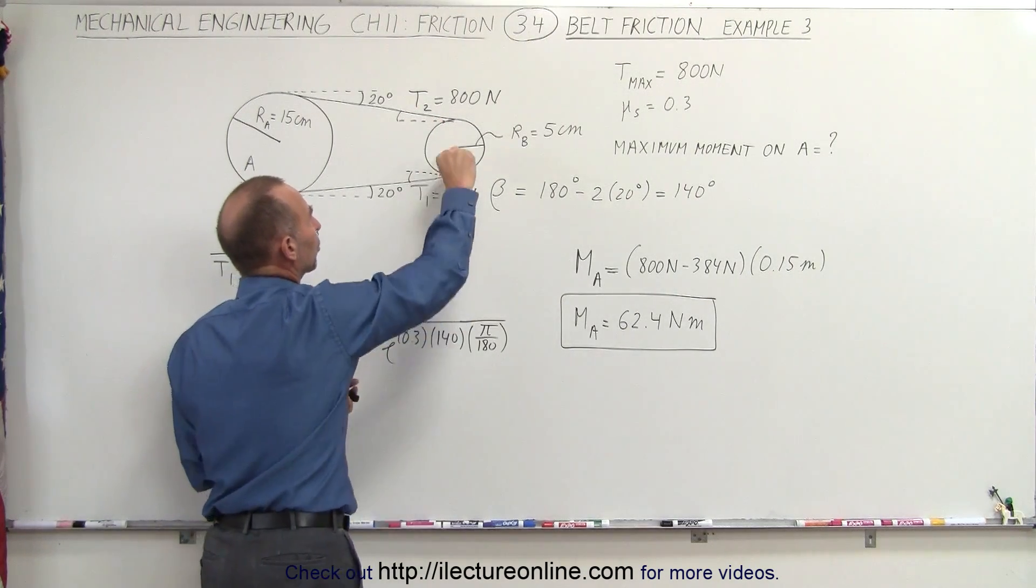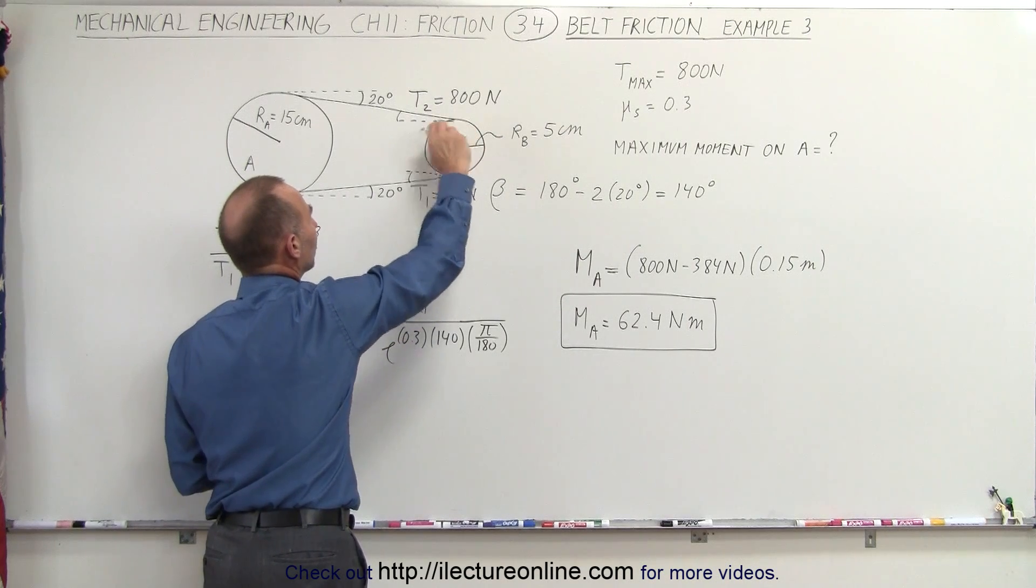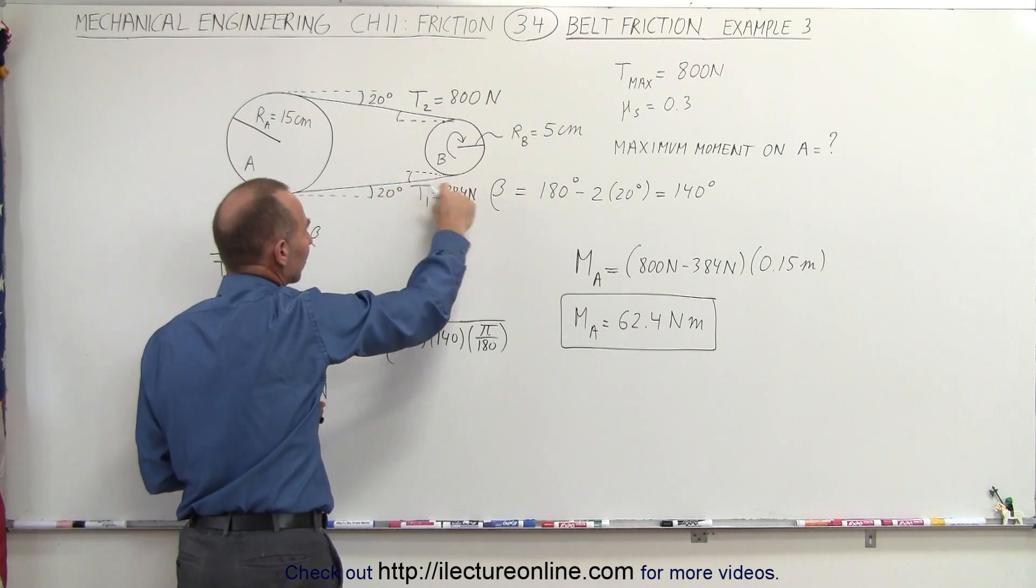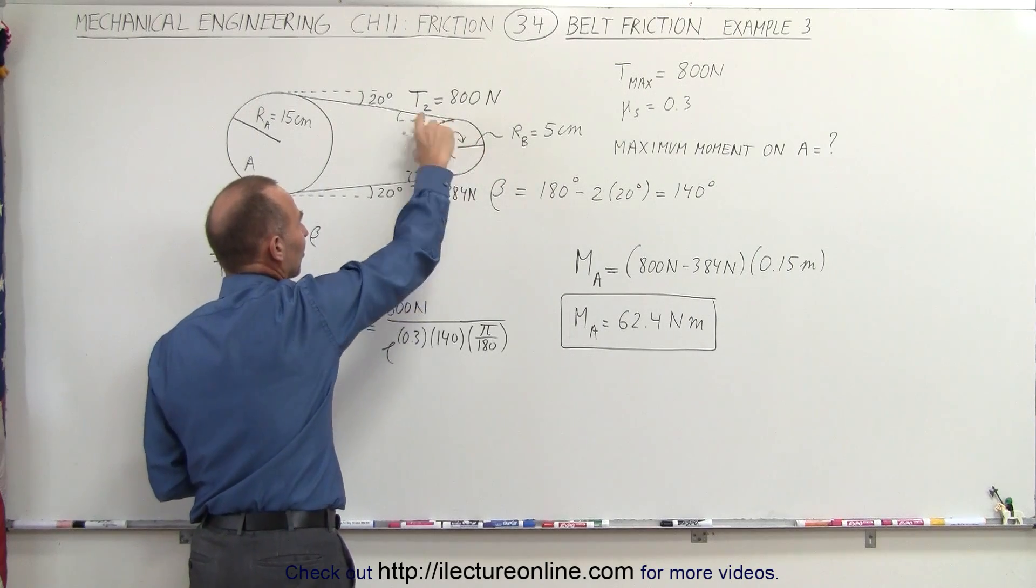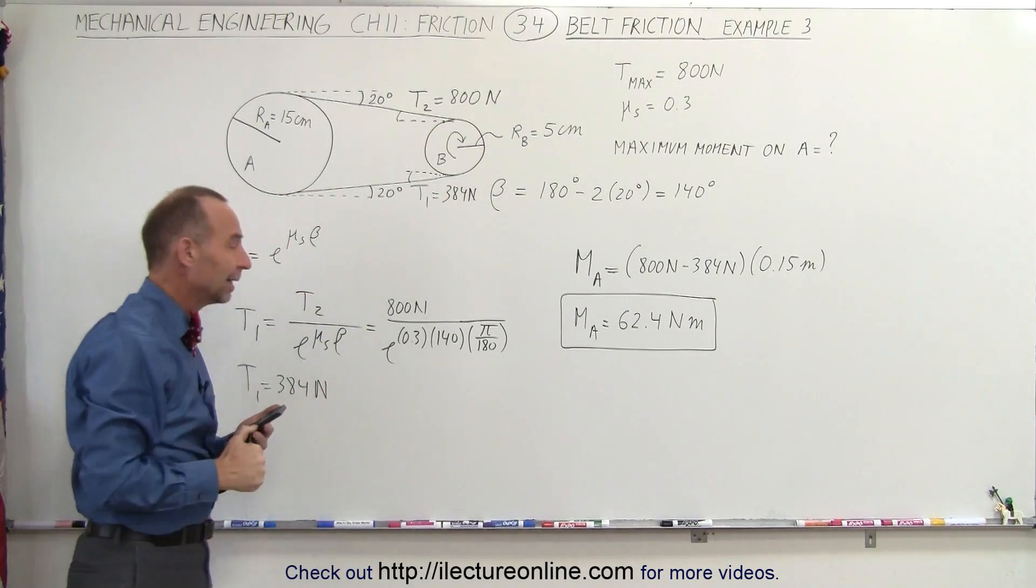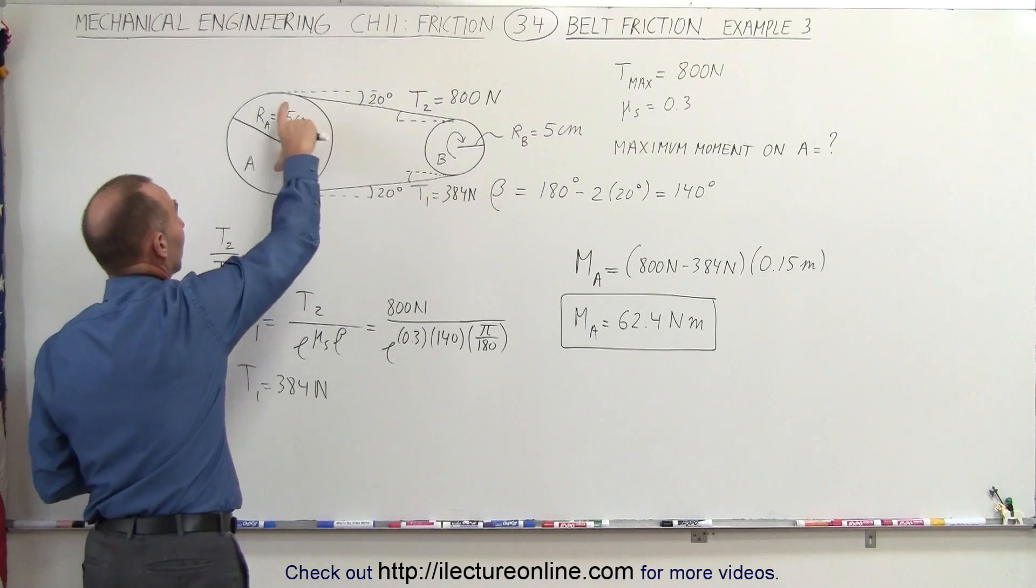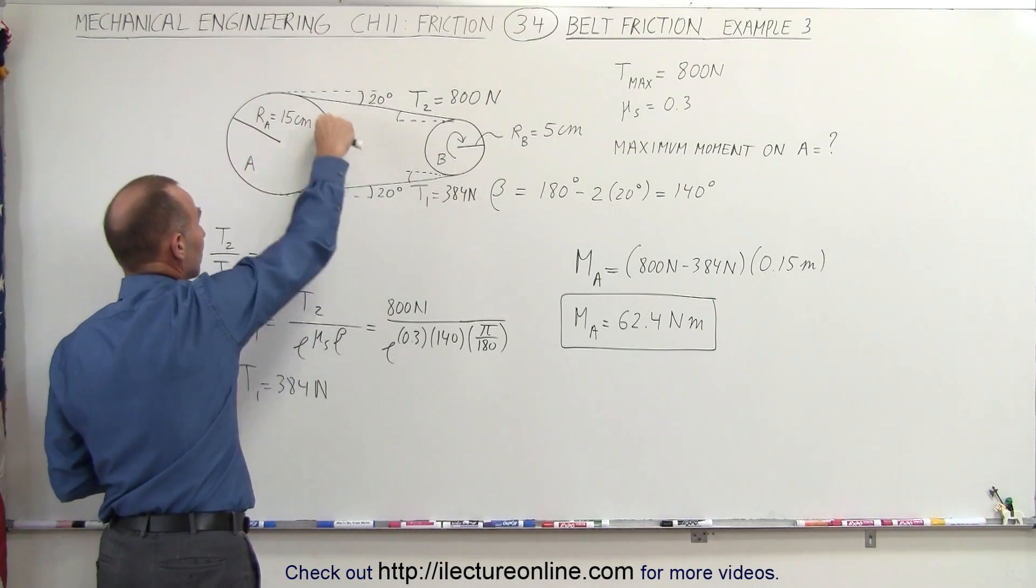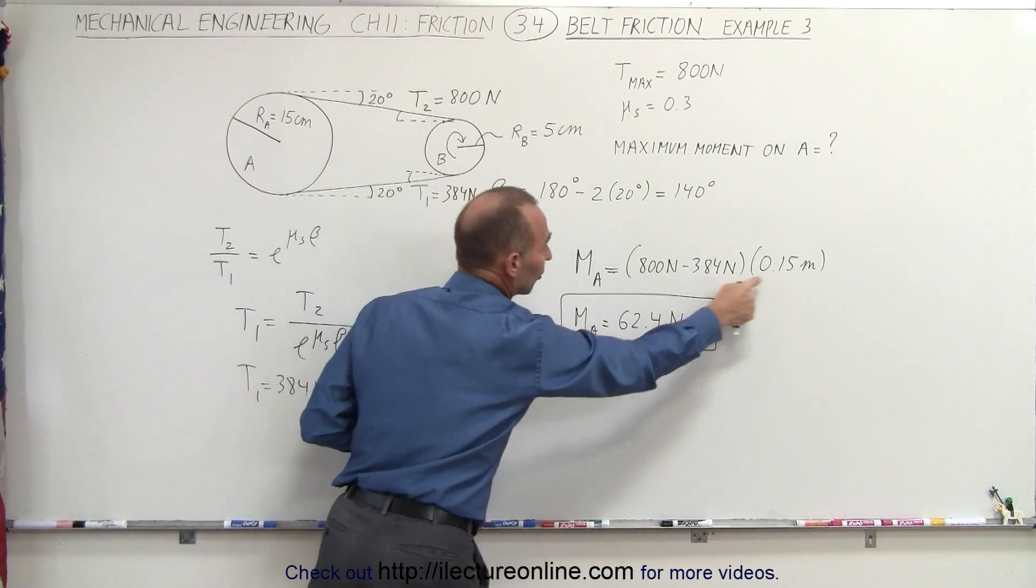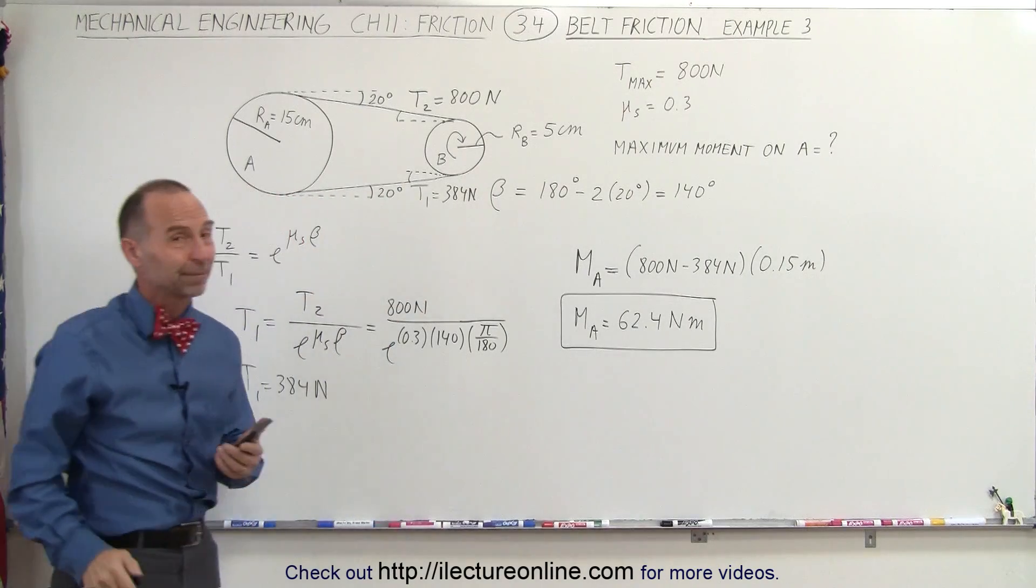Notice that this pulley will be turning in a clockwise direction, pulling on this belt, and there will be less tension on this side because of the difference in tension on both sides of the pulley. That difference in tension then applies to this pulley, and then we can find the moment by taking the difference in the tension times the moment arm. That's how it's done.